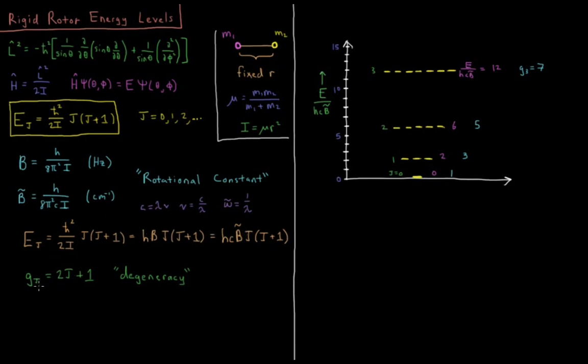And the last fact to note is that we have a degeneracy of these energy levels. The degeneracy versus j is going to be 2j plus 1. So at j equals 0, our energy is 0 because we have 0 times 1 times some stuff. So j equals 0, we're at our E over hc B bar is equal to 0. Our degeneracy is 1. There's one energy level at 0 energy at j equals 0.